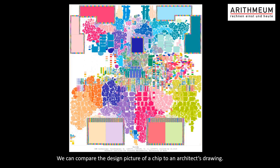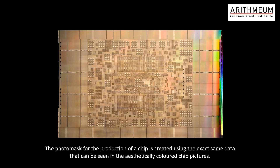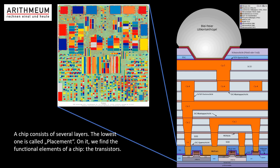The small rectangles in the design picture show the exact position of every component of the placement. The structures of the design picture and the production mask are identical — they are created with the same data. A chip consists of several layers. On the lower layers we find the functional elements of the chip: the transistors.